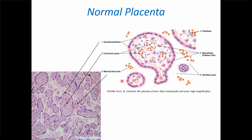Now coming to placenta. The outer lining is the syncytiotrophoblast of the villi. Inside you have the fetal blood vessels. All these are cut sections of different villi. Inside the villi you can also see macrophages called Hofbauer cells. Between the villi you can see the intervillous space, which contains maternal blood cells. So outside is the syncytiotrophoblast, the blood vessels are fetal, and between the villi you have maternal blood cells.